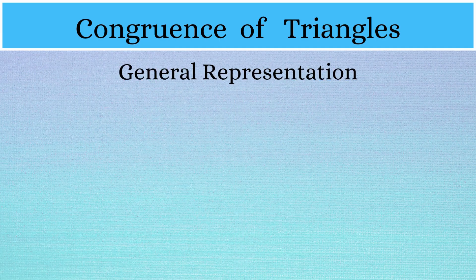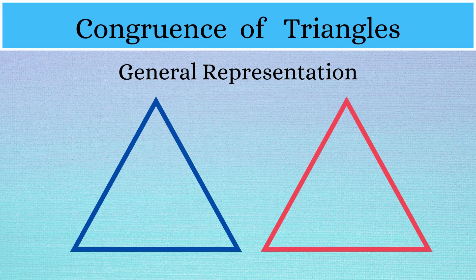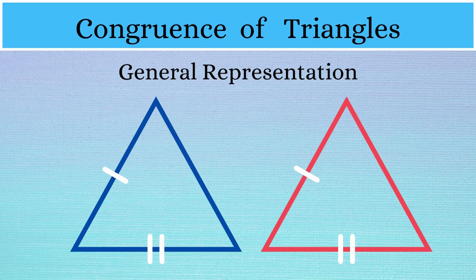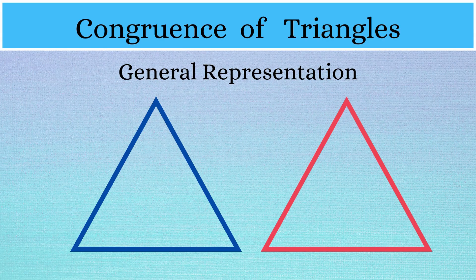Finally, let us understand how congruent triangles are generally drawn. The sides that are crossed with a single small line are both equal. The sides crossed with two small lines are equal. And the sides crossed with three small lines are also both equal. Similarly, in the two triangles, angles marked with one arc are both equal, angles marked with two small arcs are both equal, and the angles marked with three small arcs are equal.